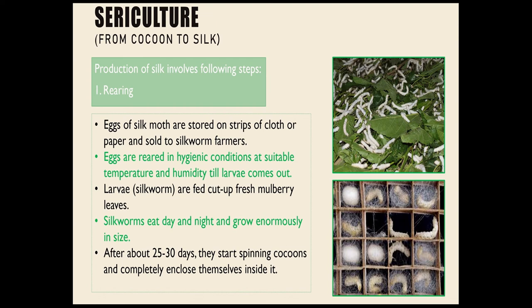During this time, the larvae are kept in clean bamboo trays along with freshly chopped mulberry leaves. After 25 to 30 days, the caterpillars stop eating and move to a tiny chamber of bamboo in the tray to spin the cocoons. Small racks or twigs may be provided in the trays to which the cocoons can get attached. The caterpillar or silkworm spins the cocoon, inside which the silk moth will develop.